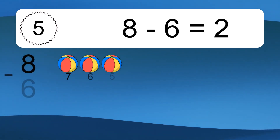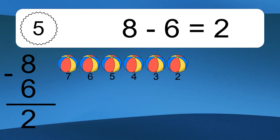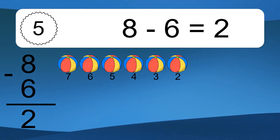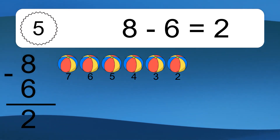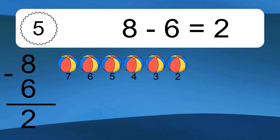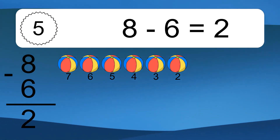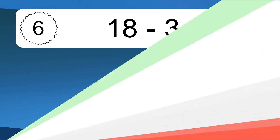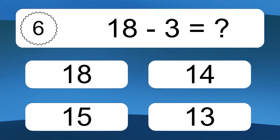8 minus 6 equals what? 8 minus 6 equals 2. Let's count it. 7, 6, 5, 4, 3, 2.